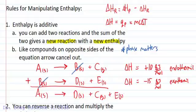We have a new equation whose delta H we also add: 10 plus negative 15 gives us a new reaction with an enthalpy of negative 5 kilojoules per mole. It's also exothermic. So those are the first two properties.